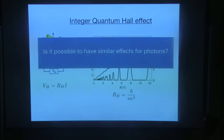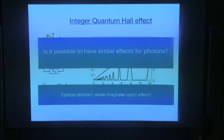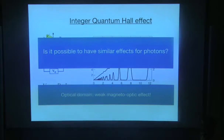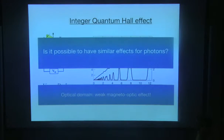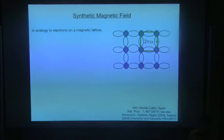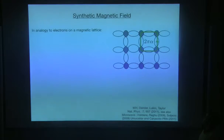In particular, can we have a situation where photons feel a transverse magnetic field and then exhibit some robust behavior? What we know is that if we put a very strong magnetic field, photons will couple to the magnetic field due to the magneto-optical effect, but this is very weak, especially in the visible domain. So what we have to do, we have to synthesize a magnetic field for photons such that we see such an effect.